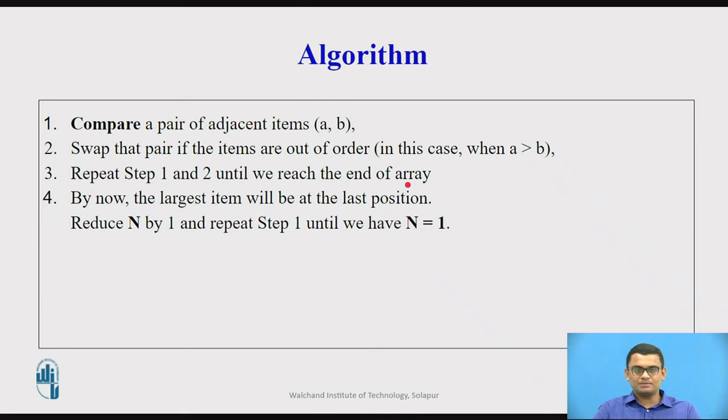Now we continue doing the compare and swapping process till we reach the end of the array. If you carefully observe, while we scan and come across the last element, the largest element will be at the last position since we are comparing and swapping the adjacent elements. Once the largest item is at the last position, it has taken its final place and then we reduce the size of the array by 1 and simply repeat steps 1 to 4 till we have n remaining as 1, meaning the size of the problem has reduced to a single element.